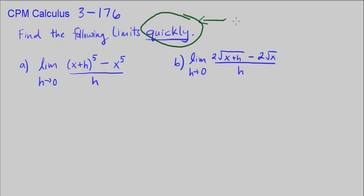Quickly here is a key word, because we know that we're going to have to multiply this out, we're going to have to basically multiply polynomials five times.